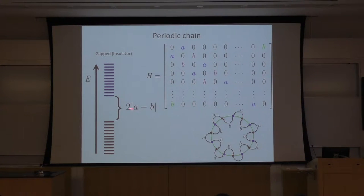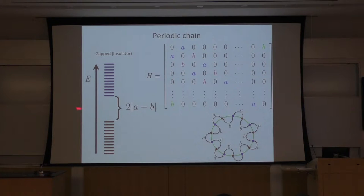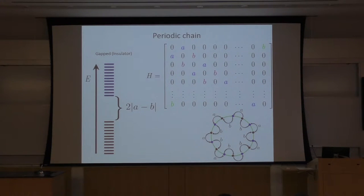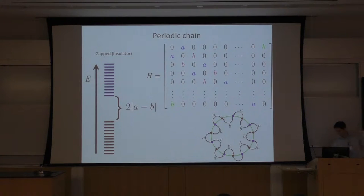I assume A and B are both positive. So if I put the chemical potential at zero, all negative energy states are occupied and all positive energy states are empty. This system is an insulator because if I want to excite any electron occupying these bands, I have to put at least this much energy into the system; otherwise, it cannot be excited.